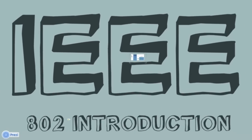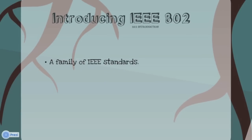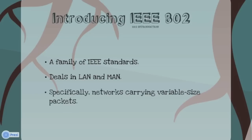Now let us go deep into IEEE 802 introduction. IEEE 802 belongs to the IEEE family. It deals especially in LAN and MAN. It has been specifically restricted to networks carrying variable-sized packets, where the probability of conflict is more. IEEE has the number 802 in the standards — since IEEE everything has been given a unique code, so IEEE ran out of numbers.